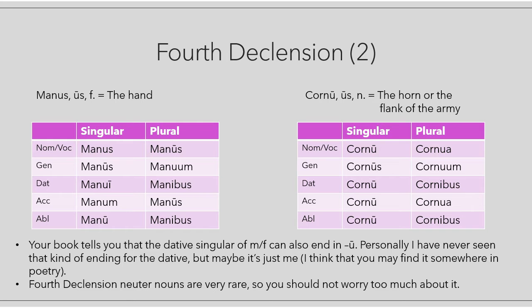As you can see, the endings in 'us' are typical of the second declension. The ending of the dative singular in 'i', and the ending of the dative and ablative plural in '-ibus' are typical of the third declension. The ending in long 'u' for the ablative singular and in '-um' for the genitive plural are instead something typical of the fourth declension.